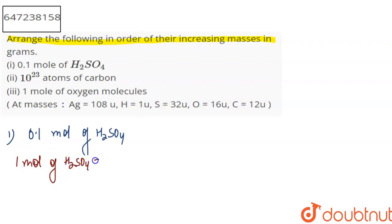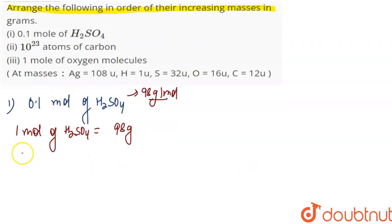In 1 mole of H2SO4, we have 98 grams because H2SO4's molar mass is 98 grams per mole. So 1 mole equals 98 grams. If we take 0.1 mole of H2SO4, it will be 9.8 grams.